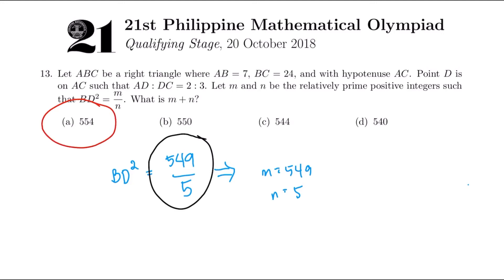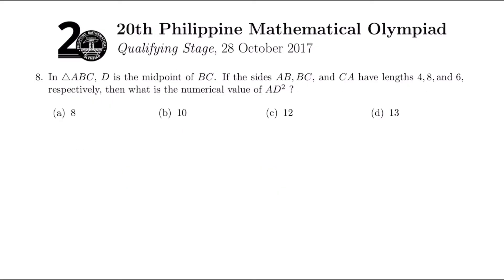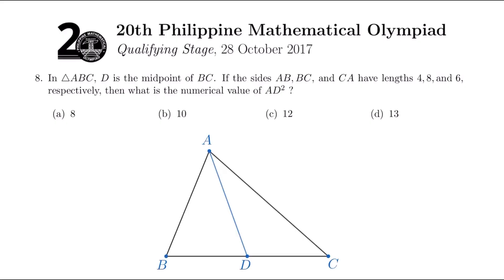Now, there's another item that utilizes the same Stewart's theorem, and it came from the 20th PMO. So let's try this one. Almost the same concept. In triangle ABC, D is the midpoint of BC. If the sides AB, BC, and CA have lengths 4, 8, and 6 respectively, then what is the numerical value of AD squared? It's not a right triangle, so it's a bit different from the first question.